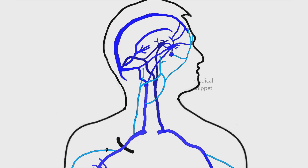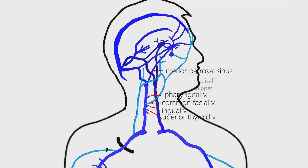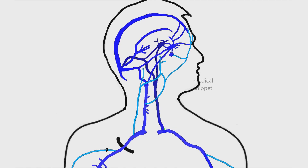Tributaries of the internal jugular vein are: inferior petrosal sinus, pharyngeal veins, common facial vein, lingual vein, superior thyroid vein, middle thyroid vein, and sometimes the occipital vein. The last tributaries are the thoracic duct on the left side and the right lymphatic duct on the right side.